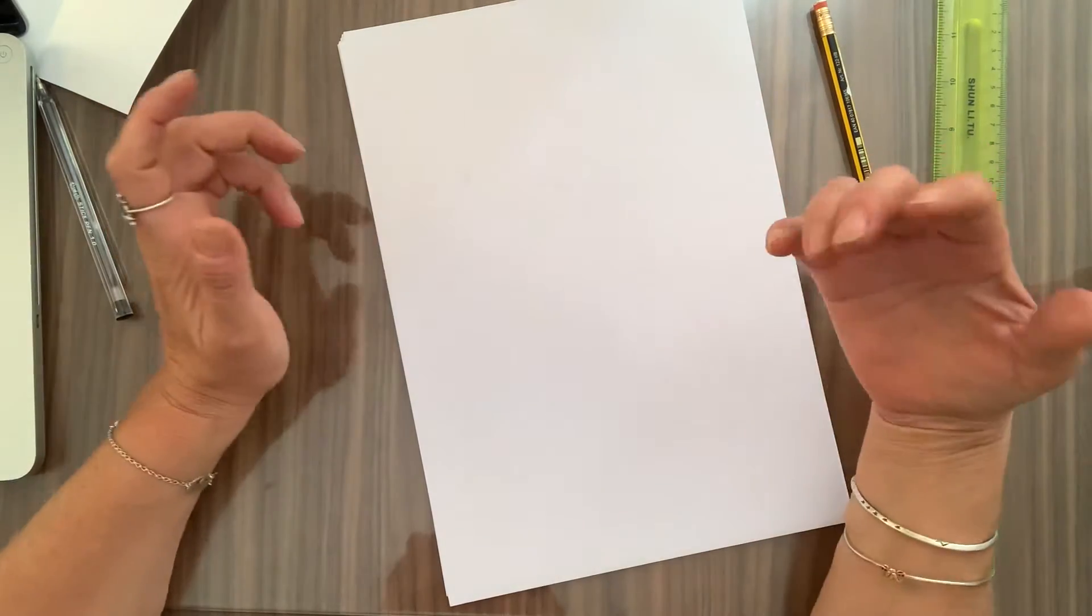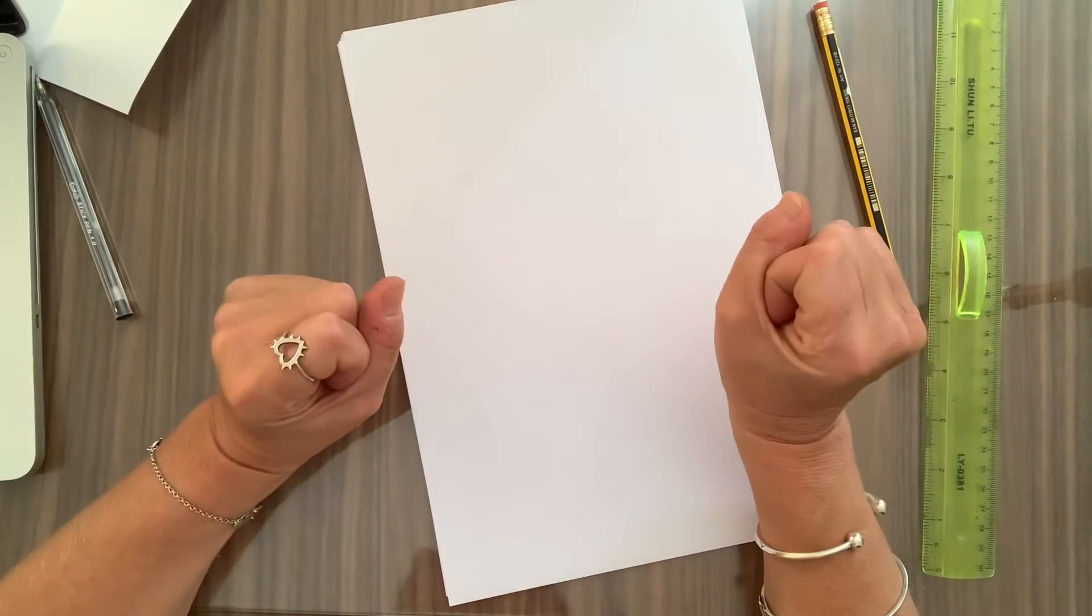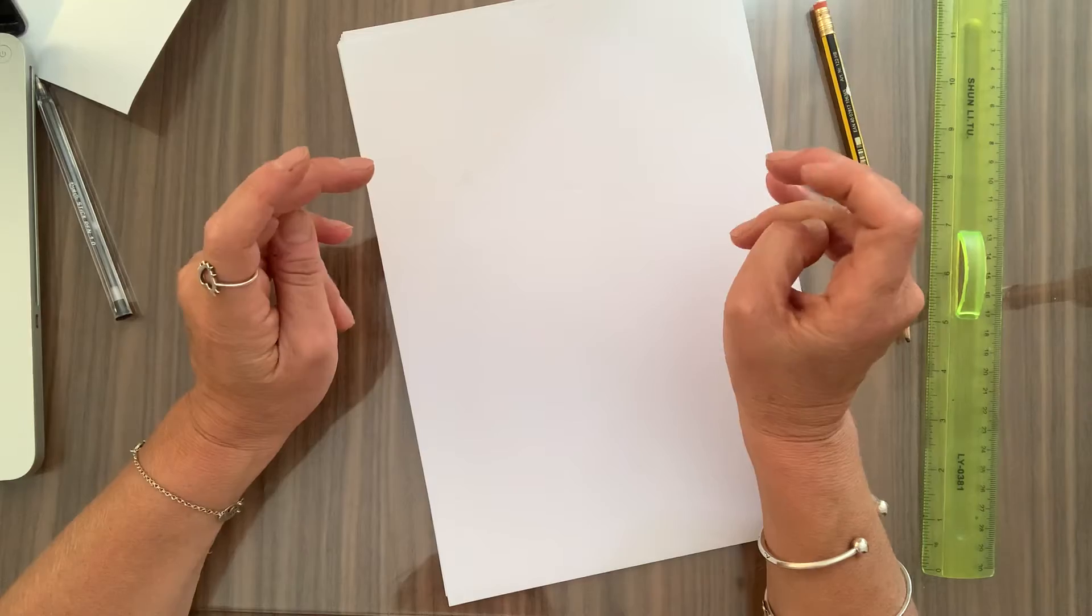So we're going to learn about different mark making: hatching, cross hatching, circling, scribbling, blending, stippling, cross contour and erasing.